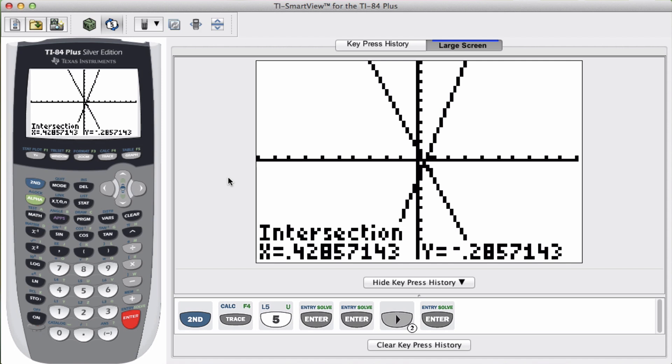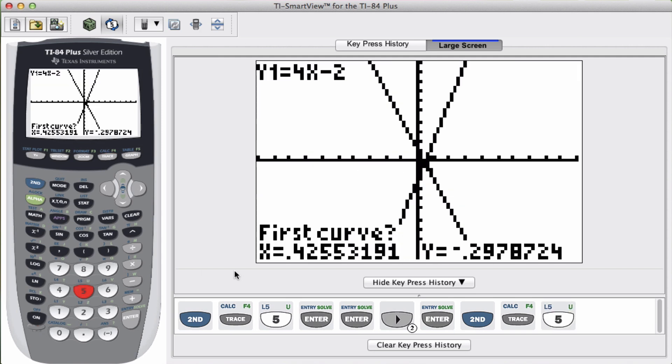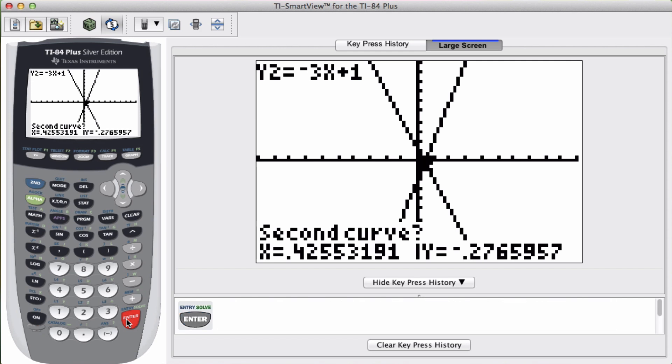And it tells us that the intersection is at 0.428, or I should say 0.429 because I'm rounding, comma negative 0.286. So this is a quick way to double check our answers. Just to kind of recap what we did, we pressed second trace and chose intersect. First curve, I'm pressing enter. It jumps to second curve, I'm pressing enter. And then I'm moving close to where I think my point of intersection is and pressing enter for my guess. We don't have to use this. That's okay if we don't. However, it could be something helpful for you.